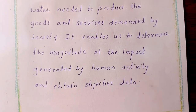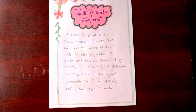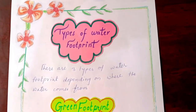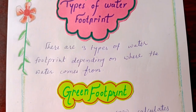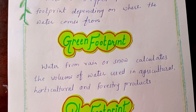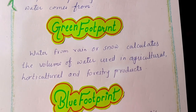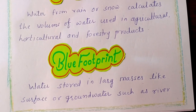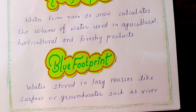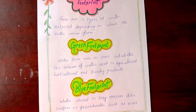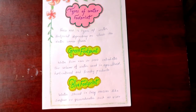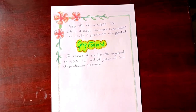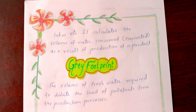The next page is types of water footprint. The first one is green footprint, that is water from rain or snow. Then blue footprint, that is water stored in river or groundwater. And the last and third one is grey water footprint.